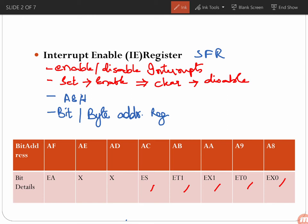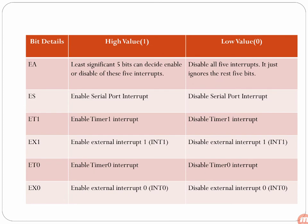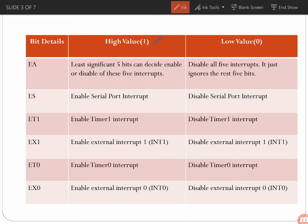Looking at the bit structure of the Interrupt Enable register: EX0 enables External Interrupt 0 — set to 1 to enable, 0 to disable. ET0 controls Timer 0 interrupt — 1 to enable, 0 to disable. EX1 controls INT1 — set to 1 to enable, 0 to disable. ET1 controls Timer 1 interrupt, and ES controls the Serial Port interrupt, all following the same pattern of 1 to enable and 0 to disable.